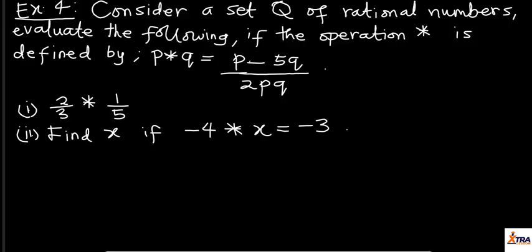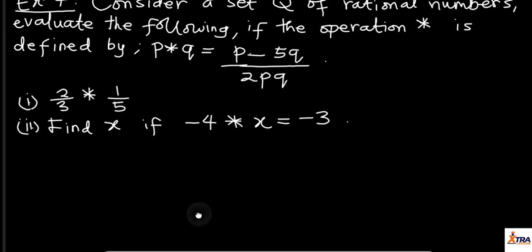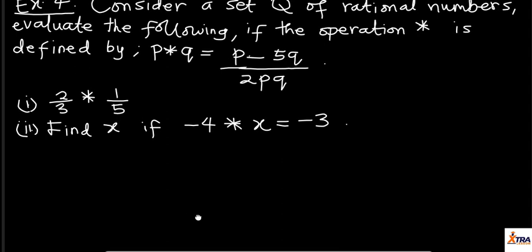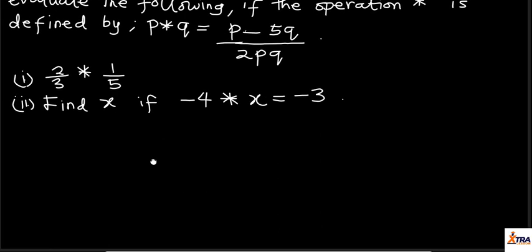Now, we have something like this here. We are told, consider a set Q of rational numbers, then evaluate the following. If the operation asterisk is defined by P operation Q equals to P minus 5Q all over 2PQ.